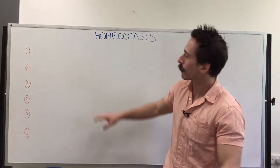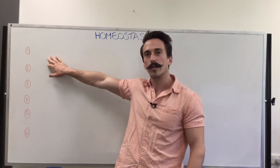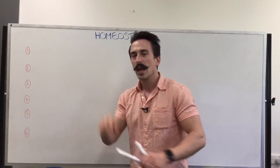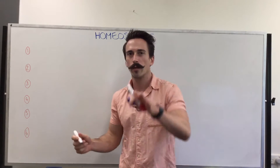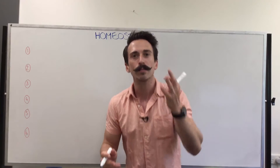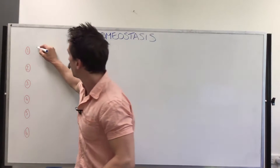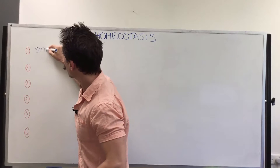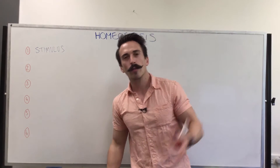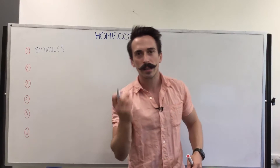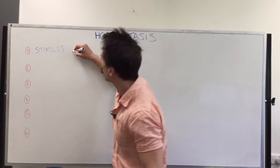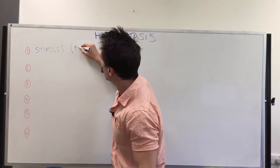Now let's go through the six different components of homeostasis and then provide examples of positive and negative feedback. The first stage or component of homeostasis is there always must be a stimulus. If we use the example of going out into the heat, the stimulus there is an increase in temperature.